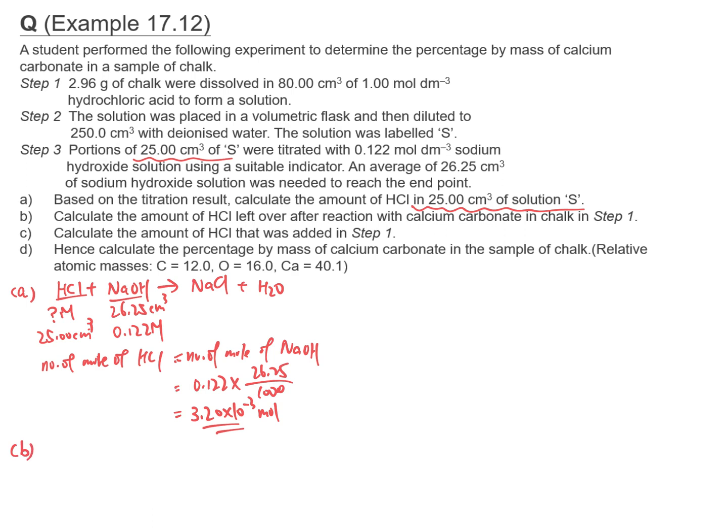Question B: calculate the amount of HCl left after the reaction with calcium carbonate in chalk in step 1. We found that in 25 cm³ of solution S, the number of moles of HCl is 3.20 × 10⁻³. Then in 250 cm³, the number of moles should be multiplied by 10.